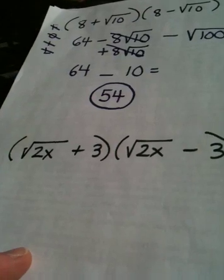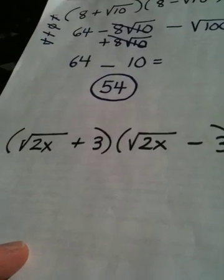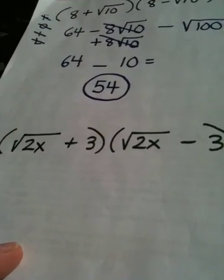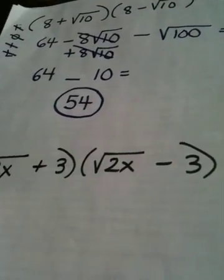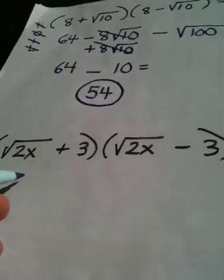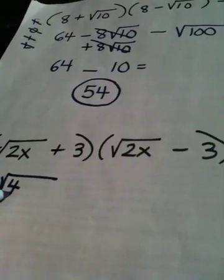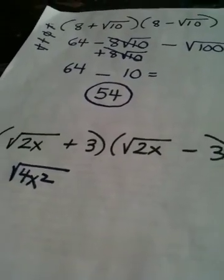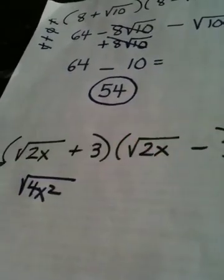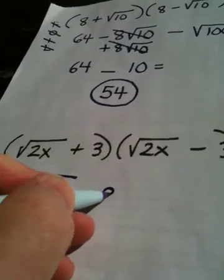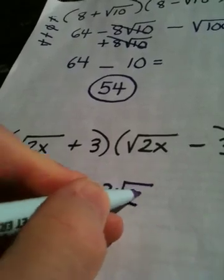This is really the difference of squares idea, but we could still do FOIL until you get the pattern better. The front: square root of 2x times square root of 2x is square root of 4x squared. The outer: square root of 2x times negative 3 is negative 3 root 2x.